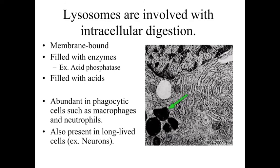In many cases, we bring materials into the cell for the process of intracellular digestion — subcellular organelles doing things similar to what organs do within an entire body. An example of this are lysosomes, which are involved with intracellular digestion. They're a membrane-bound vesicle filled with enzymes for breaking things down and filled with acids. We want to keep the lysosomes and their contents intact, because enzymes and acids floating freely within the cell would indiscriminately digest materials we need. These are very abundant in phagocytic cells like macrophages and neutrophils, but they're involved with intracellular digestion in a controlled way throughout many cell types.